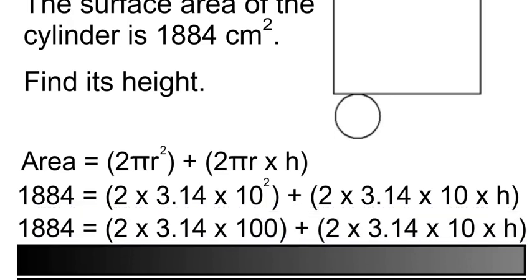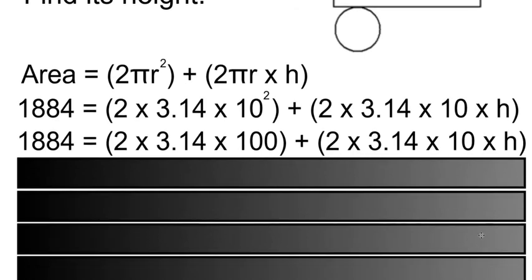1,884 is equal to 2 times 3.14 times 10 squared, which is 100, plus 2 times 3.14 times 10 times h.